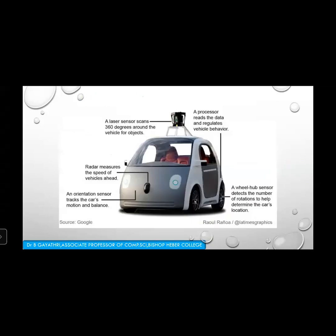The car's parts include: a laser sensor scanning 360 degrees around the vehicle for objects, a processor that reads data and regulates vehicle behavior, a wheel hub sensor that detects the number of rotations to determine the car's location, an orientation sensor that tracks the car's motion and balance, and a radar that measures the speed of vehicles ahead.